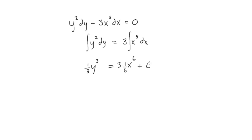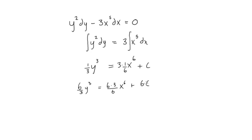Now let's clean it up by multiplying everything by 6. We get 6 over 3 times y cubed equals 6 times 3 over 6 times x to the 6, plus 6 times c. Since c is an arbitrary constant, 6 times any number is still just an arbitrary number, so we simplify: 6 over 3 is 2, giving us 2y cubed.